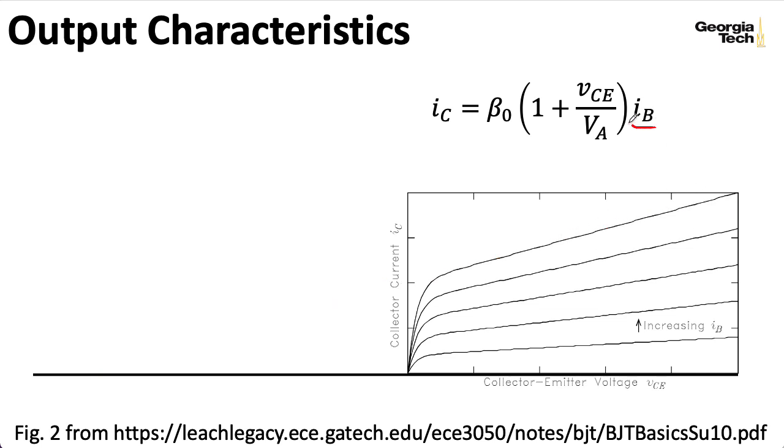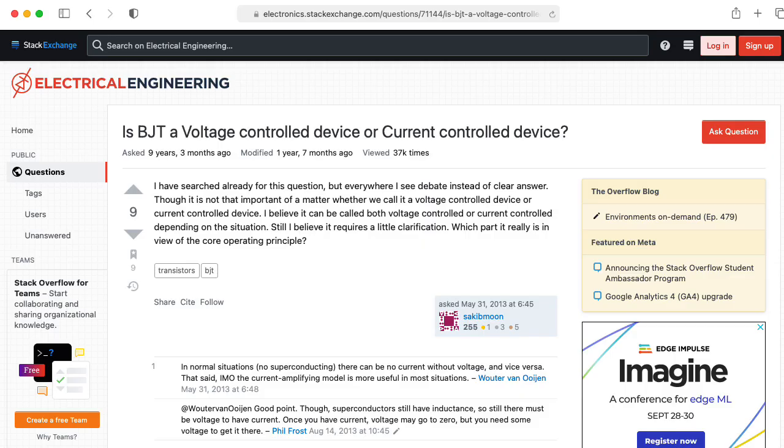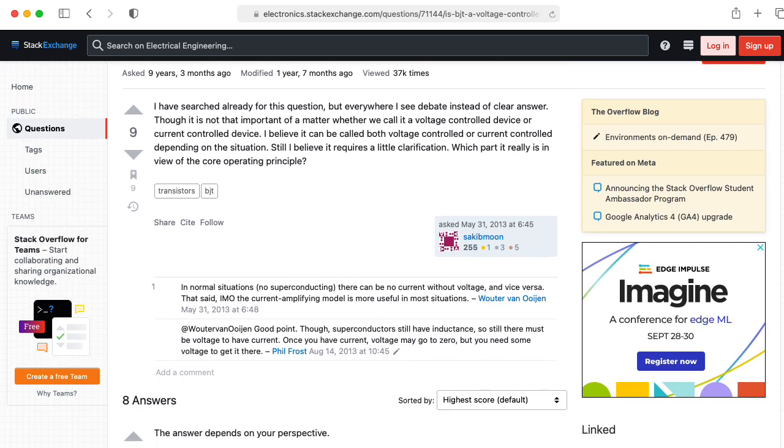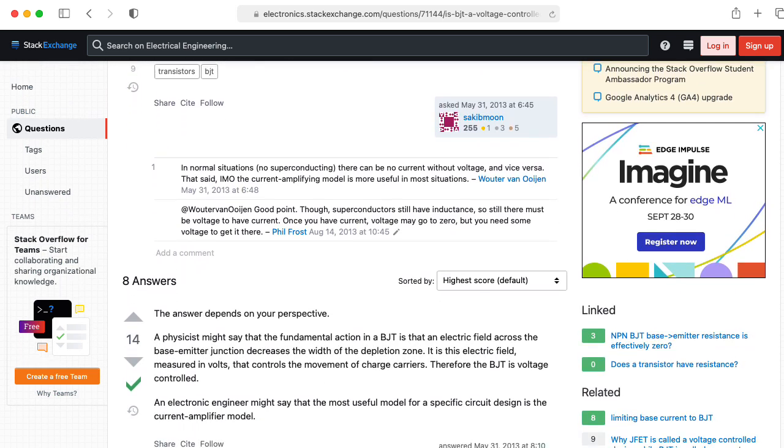So you get a different line for each choice of base current, or equivalently, base emitter voltage. Now, I'm following the general description of these lines changing with the base current because that's how we traditionally describe it. But in designing with these kinds of circuits, it's really better to think about the base emitter voltage. And the fact that there's a current flowing through the base is something that has to happen because of the physics, but it's kind of incidental.